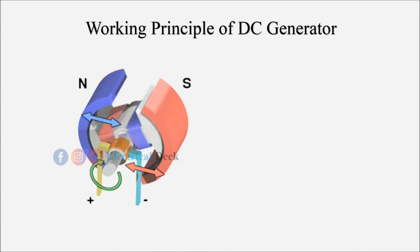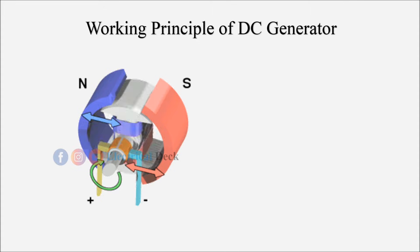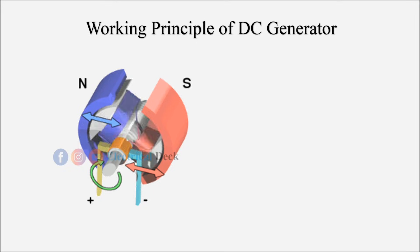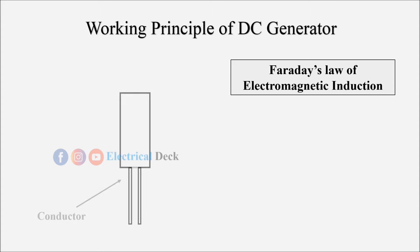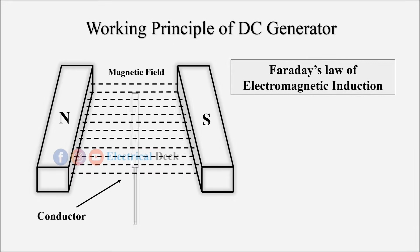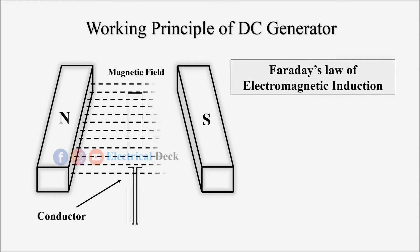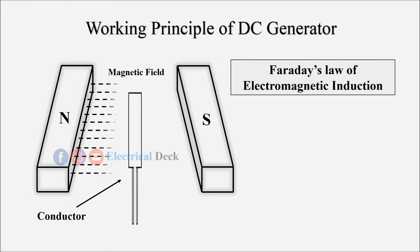Before deriving the equation for a DC generator, let us check out the working principle of a DC generator and how EMF is induced. A DC generator works on the principle of Faraday's law of electromagnetic induction — that is, when a conductor moves in a magnetic field, it cuts magnetic lines of force, causing an EMF to be induced. The magnitude of this induced EMF depends upon the rate of change of flux linked with the conductor.